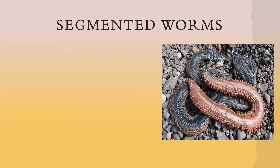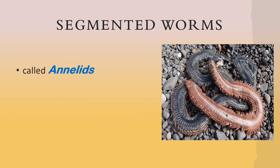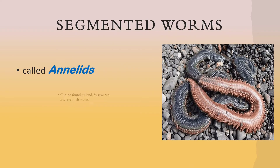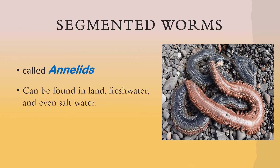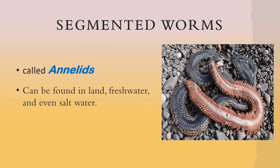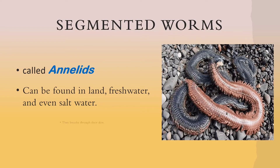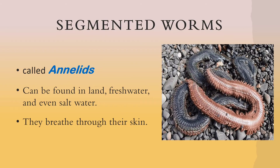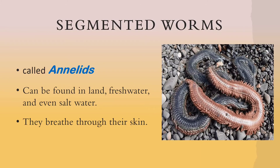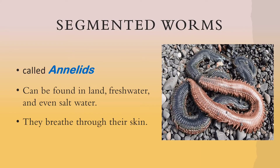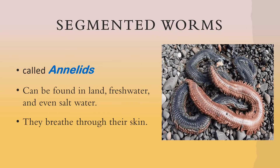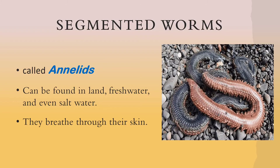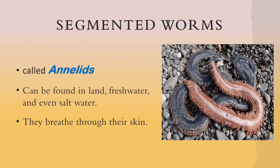Segmented worms are also called annelids. Annelids can be found on land, in fresh water, and even in salt water. While annelids have digestive, circulatory, and nervous systems, they do not have a respiratory system. They have to breathe through their skin.